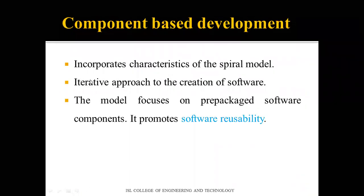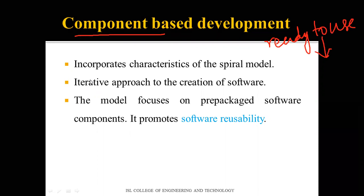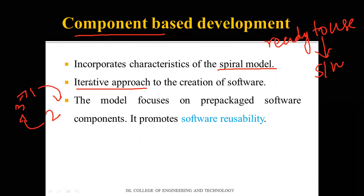The first is component-based development. As the name suggests, you take components that are already built — pre-built or ready-to-use components — and embed them within the software you're building. This model takes many characteristics of the spiral model and follows an iterative approach, meaning the cycle continues until the entire software is complete.